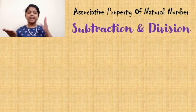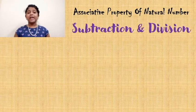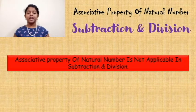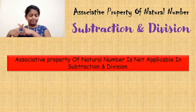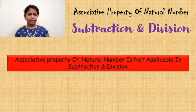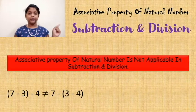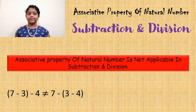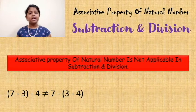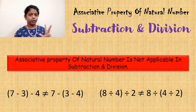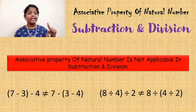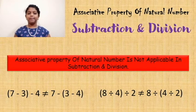Now let's check whether the associative property of natural number is applicable in subtraction and division. Actually, the associative property of natural number is not applicable in subtraction and division. Because (7 - 3) - 4 is not equal to 7 - (3 - 4), and (8 ÷ 4) ÷ 2 is not equal to 8 ÷ (4 ÷ 2).